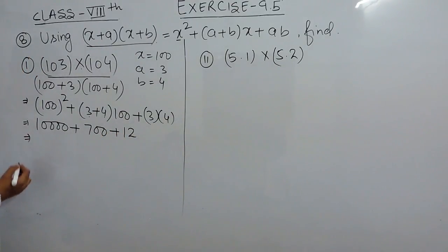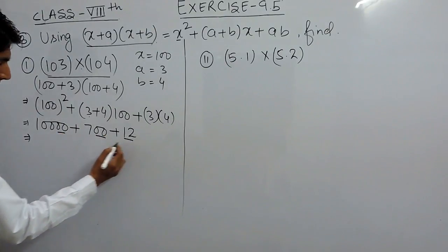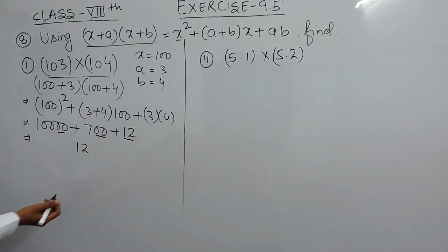Now, I have to add 10,000, 700, and 12 will be as it is. This and this will become 7 and 0, 1. So, 10,712 should be the answer here.